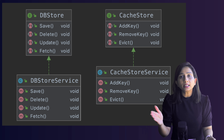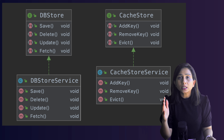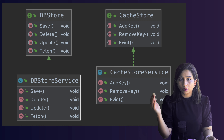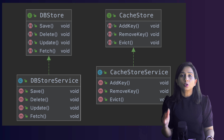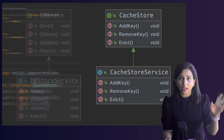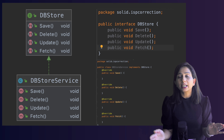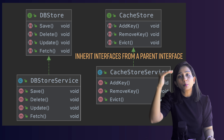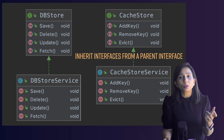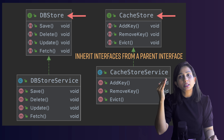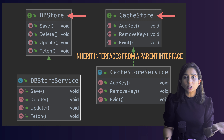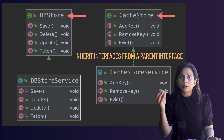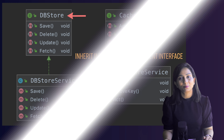The better approach is to create two separate interfaces: a DataStore interface with four functions and a CacheStore interface with three functions. It's also possible for these interfaces to inherit from a parent interface if there are common functions shared between them. Just like Single Responsibility Principle avoids giving too much work to one class, Interface Segregation Principle keeps each interface focused on a limited set of functionalities by creating more, smaller interfaces.